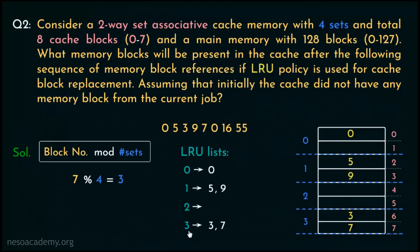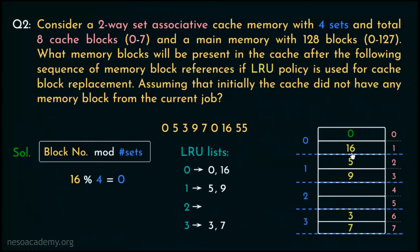For block request 0, it results in a cache hit — set 0 has only one element so no update is needed. For block request 16: 16 mod 4 = 0, so block 16 is placed in line number 1 of set 0. Once placed, we update set 0's LRU list placing 16 at the end, indicating block 16 is now the most recently used block of set 0.